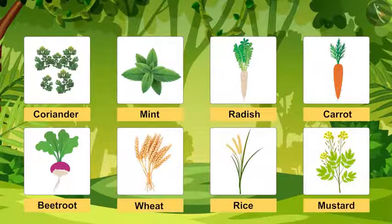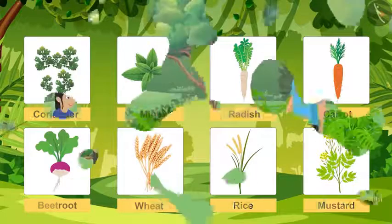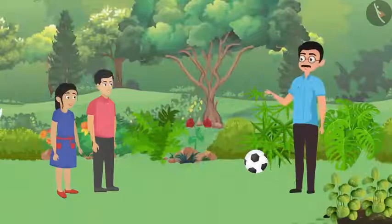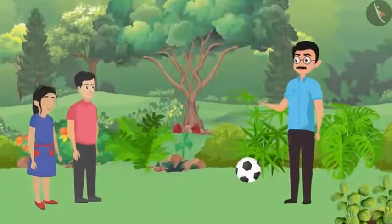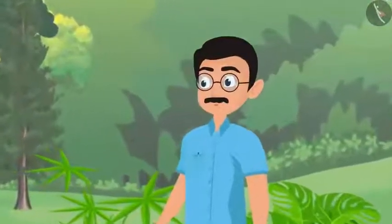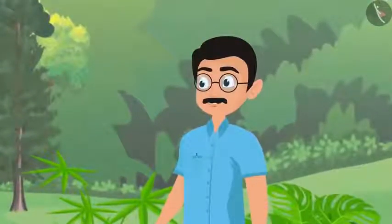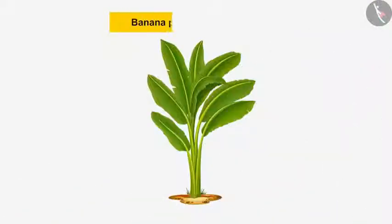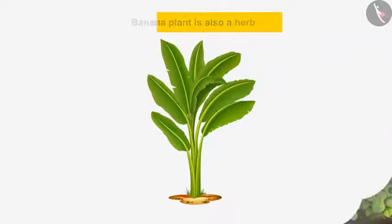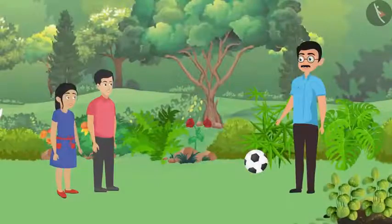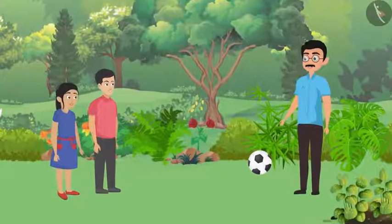Examples of herbs include coriander, mint, radish, carrot, beetroot, rice, and mustard. Interestingly, most herb plants are small, but the banana plant — which is also a herb — is pretty huge!